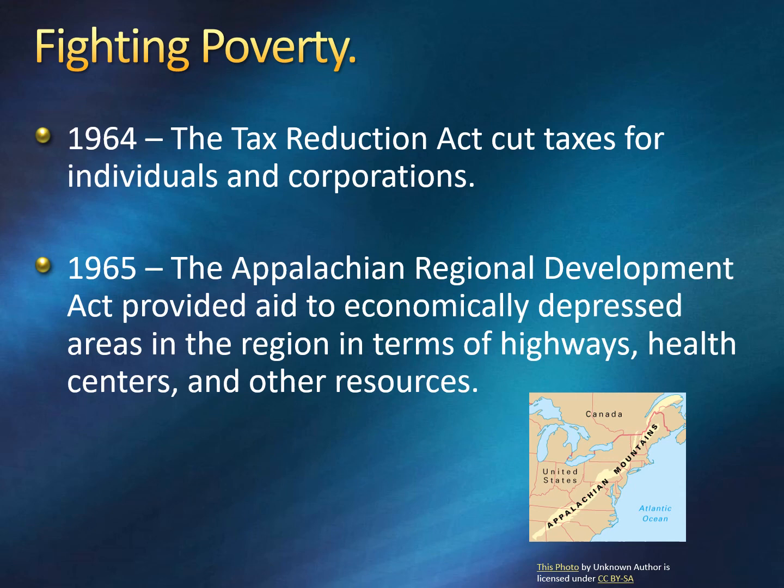Fighting poverty was a big part of Johnson's agenda. In 1964, the Tax Reduction Act cut taxes for individuals and corporations. In 1965, the Appalachian Regional Development Act provided aid to economically depressed regions in terms of highways, health centers, and other resources. A lot of areas and towns in the Appalachian Mountain region, former coal country and similar places, suffered from economic decline, and Johnson looked to support those areas as well.